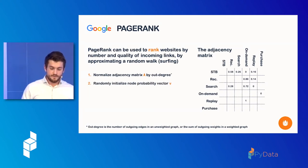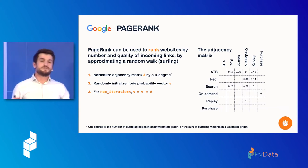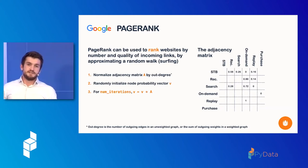We then randomly initialize some node probability vector, and for some number of iterations, we just update the probability vector by multiplying it by doing a dot product with the adjacency matrix. And you can see that if the edge weight is very high, then that probability, the incoming edge weights are very high, then the probability vector will, after all these iterations probably also be the largest.